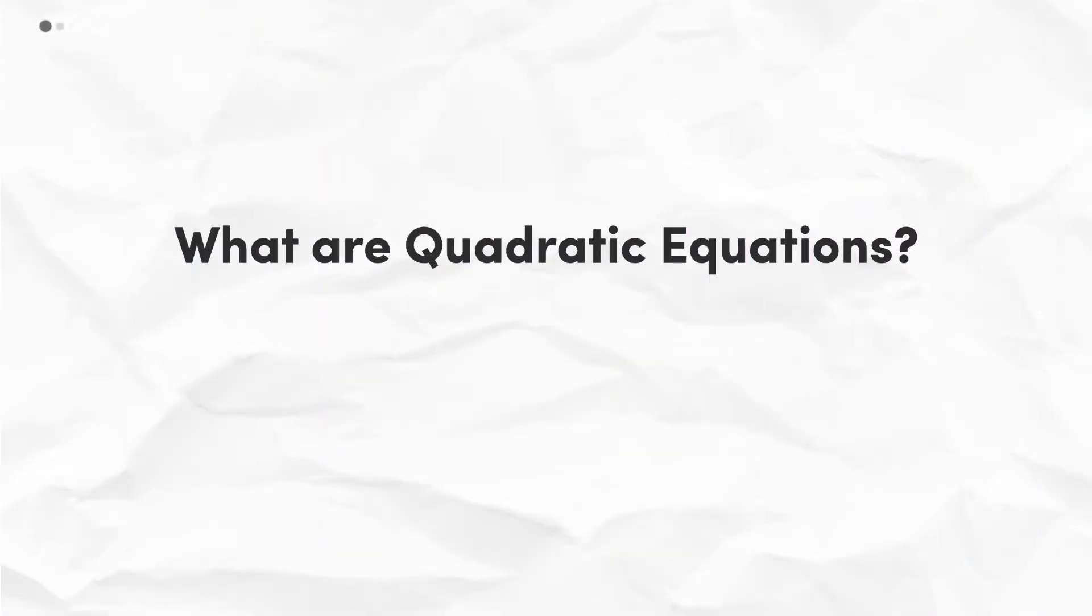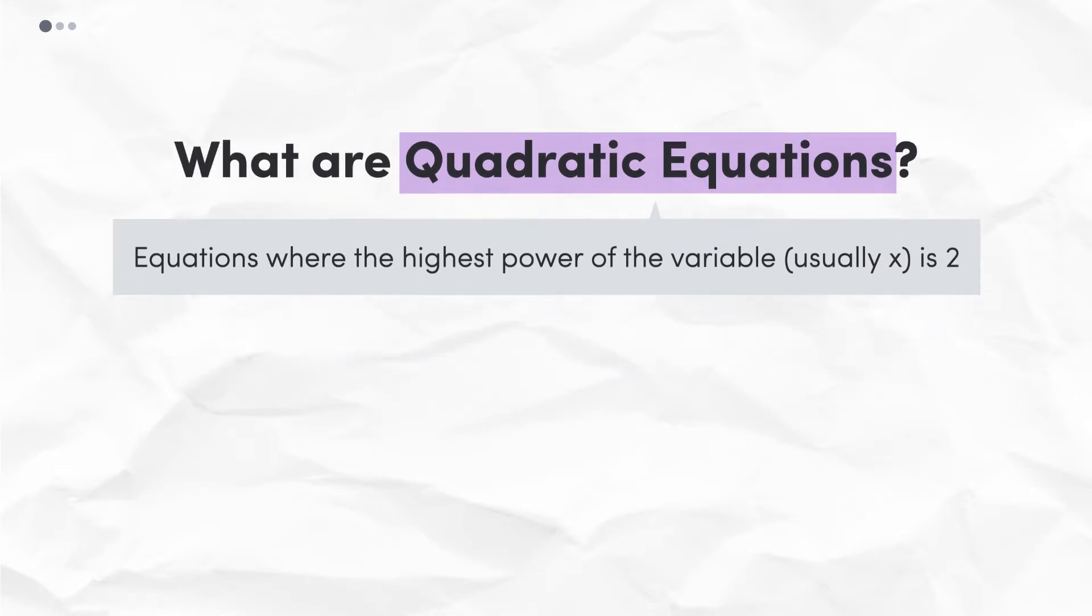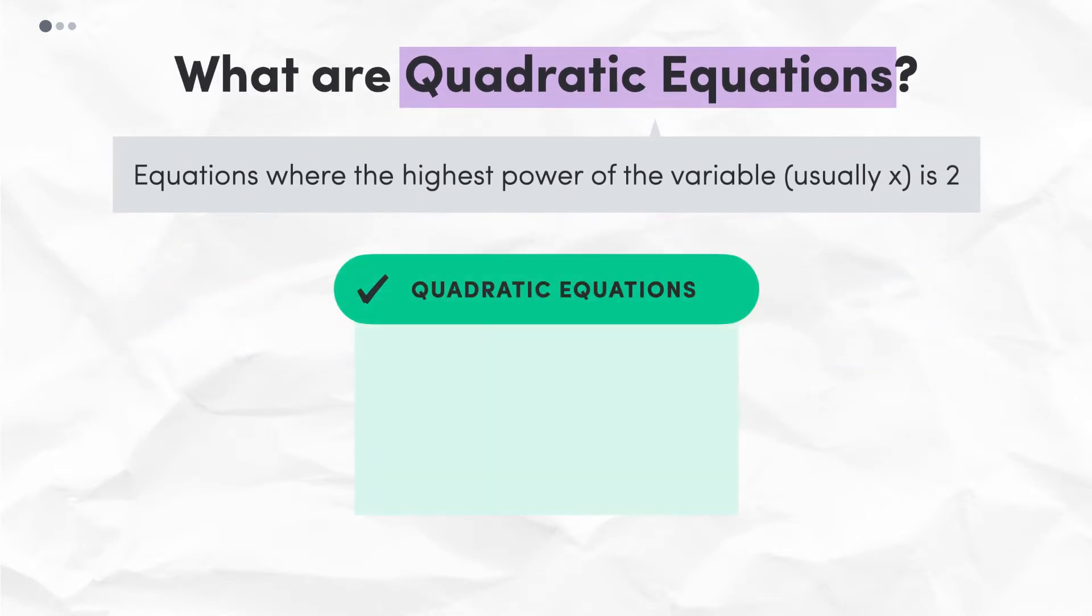First, what are quadratic equations? Well, quadratic equations are equations where the highest power of a variable is 2. Some examples of quadratic equations include 5x squared plus x plus 1 equals 0, and 3 plus m squared equals 13, because the highest power of the variable in each equation is 2.